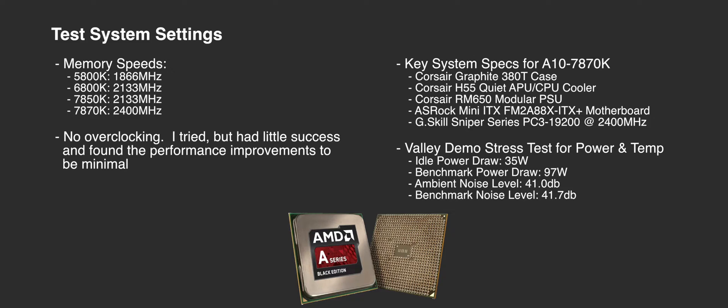I did a bit of stress testing to look at power draw and temperature, running the Valley demo for about half an hour. Idle power draw at the Windows desktop was only 35 watts, and benchmark power draw was only 97 watts. The ambient noise in my office was 41 decibels and fully loaded it measured only 41.7 decibels — relatively quiet, especially considering typical household ambient noise.